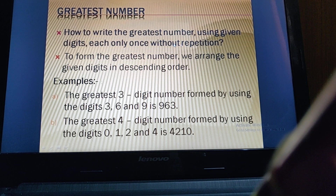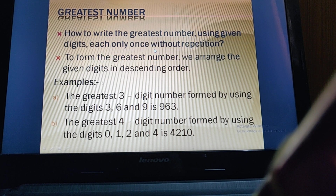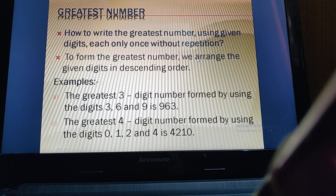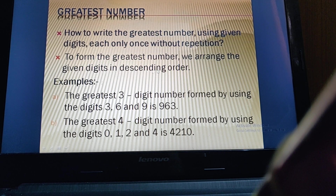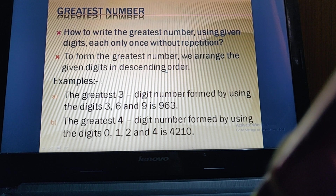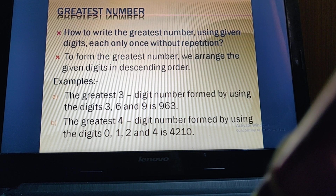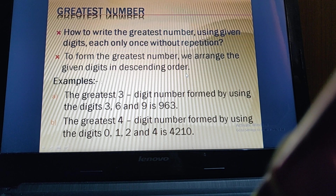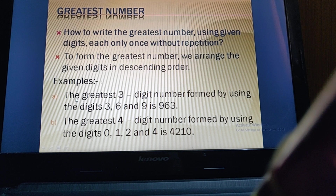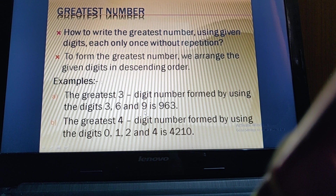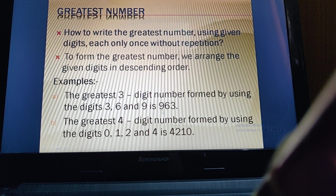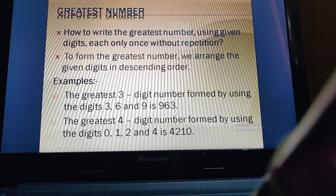Now, how to write the greatest number using digits without repetition. To form the greatest number, we arrange the given digits in descending order — from greatest to smallest. When there is no zero, for example: the greatest three-digit number using digits 3, 6, and 9. The greatest number starts from the largest digit — 9.